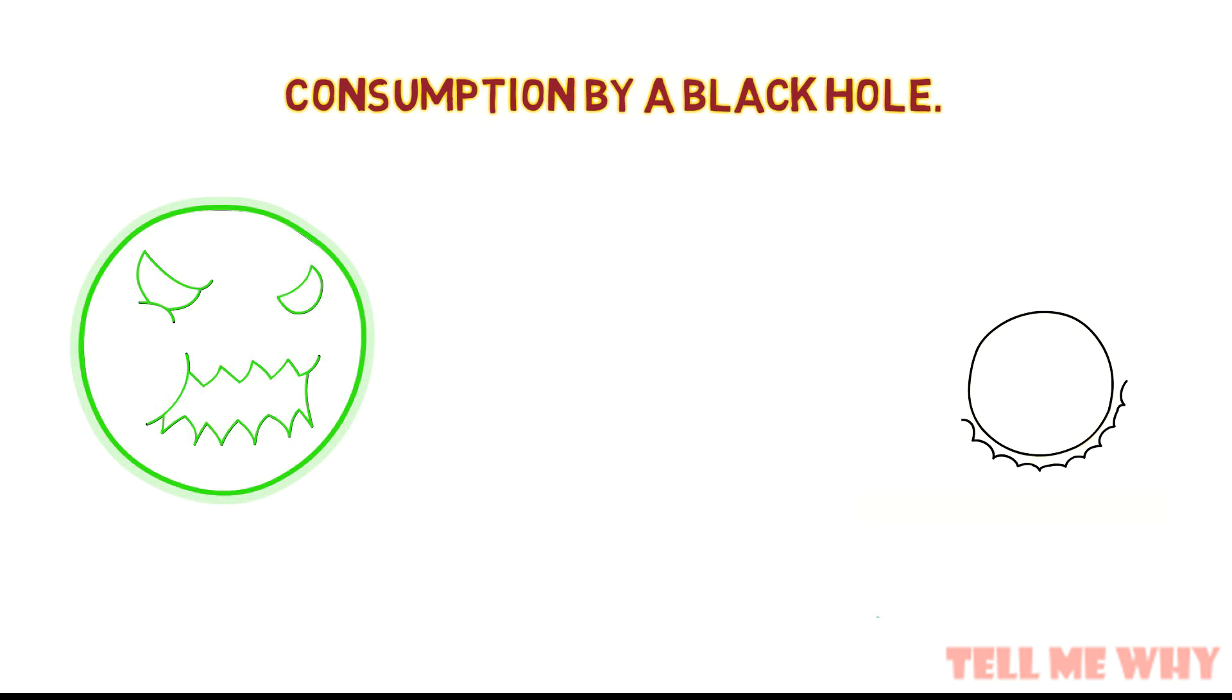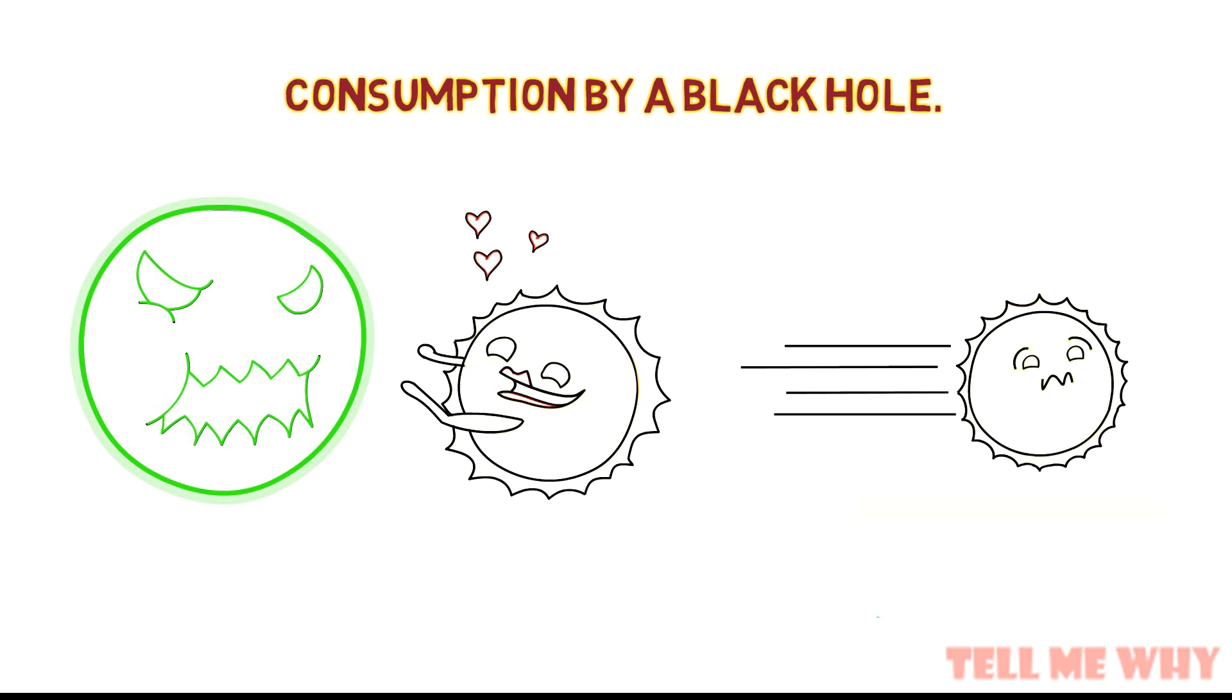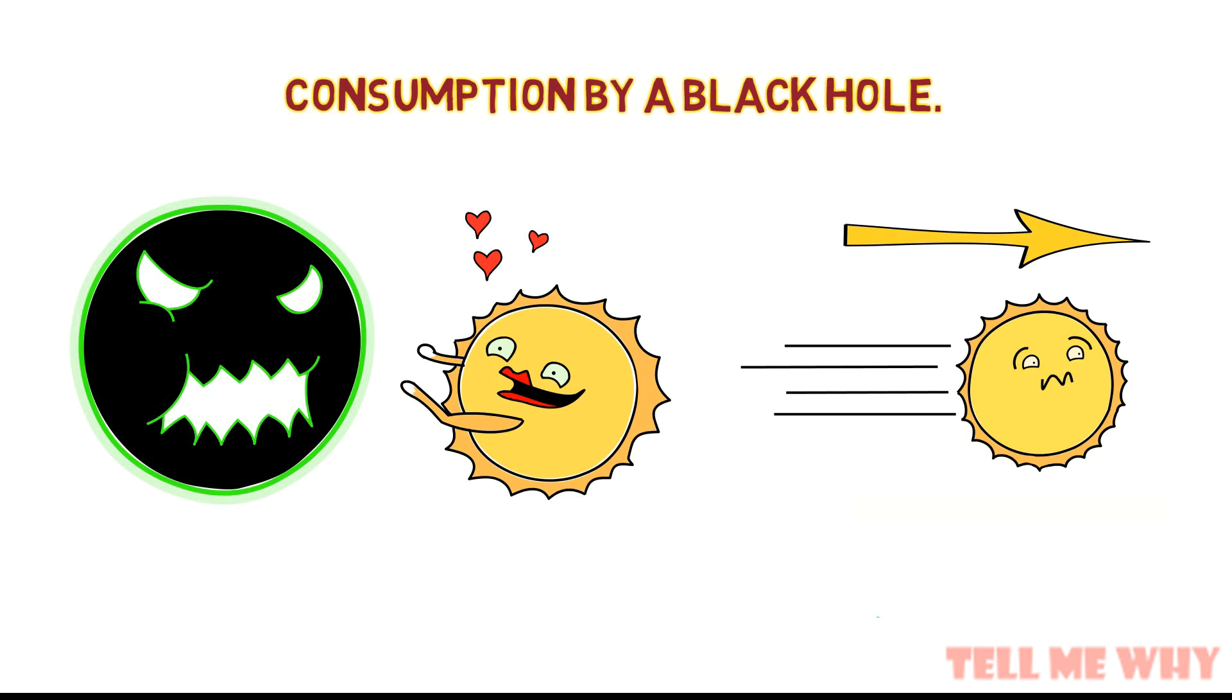Consider the previous binary system. If the binary system reaches close to the black hole, one of the stars is consumed by the black hole. The other is ejected because of the extreme gravitational effect. The speed of the ejected star allows it to escape its galaxy. These stars are called hypervelocity stars.